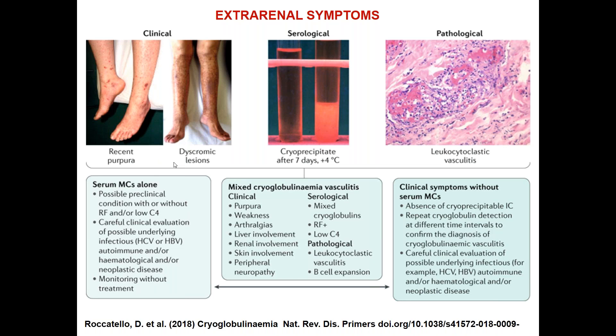The most frequent extrarenal symptoms are purpura with weakness, arthralgia, and peripheral neuropathy. Peripheral neuropathy is better detected by electromyography, which is strongly recommended in any cryoglobulinemic patient even if asymptomatic.